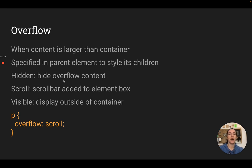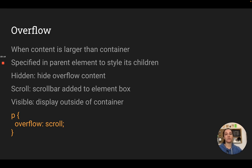There are different states you can tell the website to do with content that's popped outside its box. You can say hide it — overflow: hidden. You can do overflow: scroll, which hides the overflow but lets someone scroll through to see it. And there's overflow: visible, which is the default — it will just show you the content outside of the box. It'll look weird, but sometimes that's what you want. So it looks like overflow colon and then either hidden, scroll, or visible.